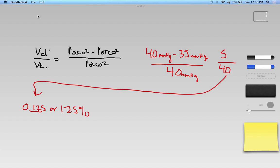Okay, so that is my dead space to tidal volume ratio of 12.5%. And in a normal person who's doing well, this ratio should be less than about 33%. It should be under 33% or under. Some people will even say under 40%. It just kind of depends on who you're going with.